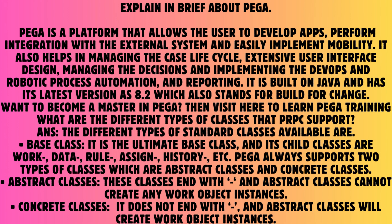Question: What are the different types of classes that PRPC supports? Answer: The different types of standard classes available are: Base class — it is the ultimate base class and its child classes are Work, Data, Rule, Assign, History, etc. PEGA always supports two types of classes: abstract classes and concrete classes.